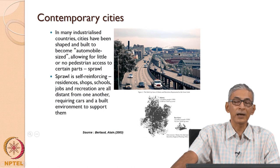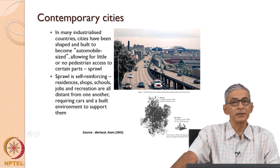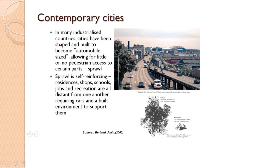In turn, what ends up happening is you have jobs and other amenities away from cities. If you look at two cities having the same population — the city of Atlanta and the city of Barcelona — roughly the same population. Because Barcelona was largely built around public transport, around buses and trains, it's retained its compact shape. In contrast, Atlanta in the United States has encountered a lot of sprawl. It's spread out and become automobile-sized.